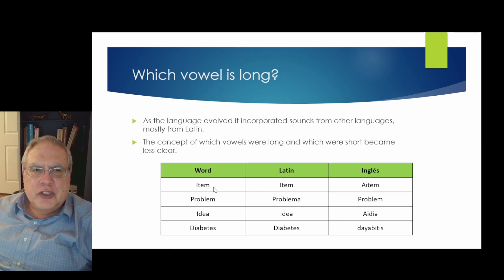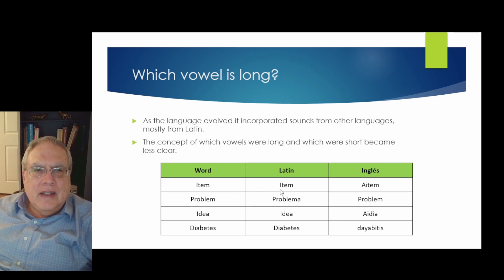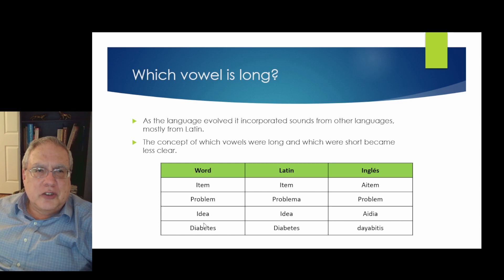Let's look at how some of these words were adapted in English. In the word 'item' (I-T-E-M), there is one consonant between the I and the E, making the I long — and yes, it is pronounced 'item.' In Latin it would be 'item,' with the I just pronounced a little longer — 'eetem.' In English it became 'item.'